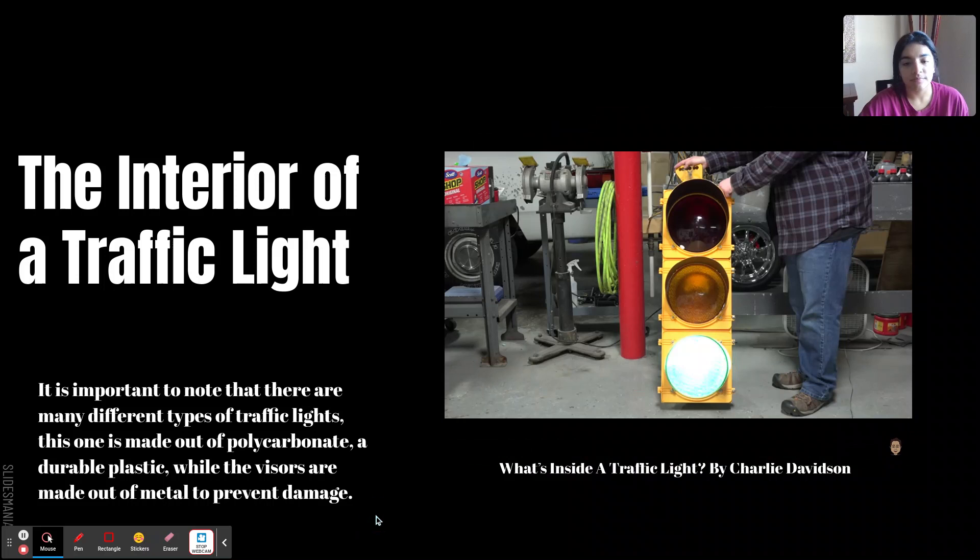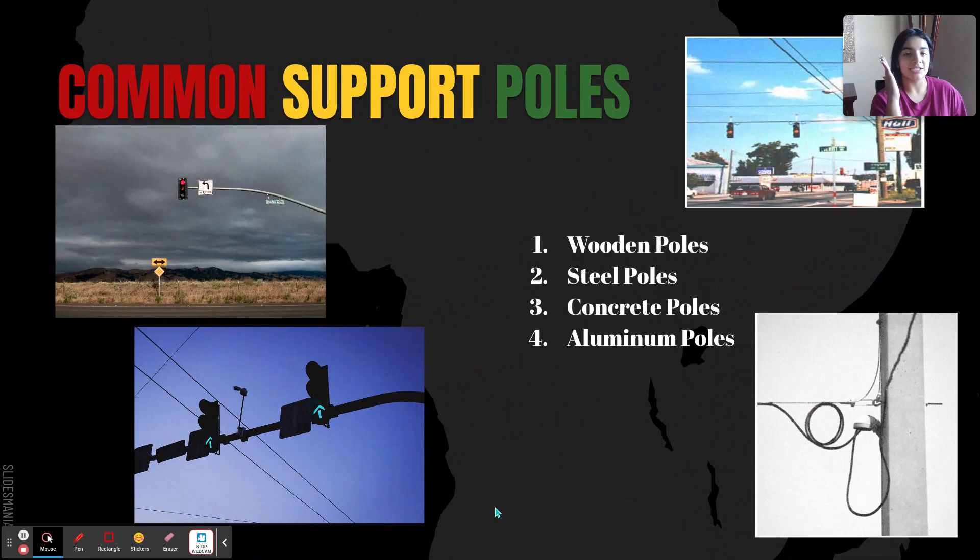Common support poles help the traffic light stay upright, and they are usually made out of wood, steel, concrete, or aluminum.